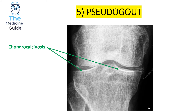This is an example of pseudogout. On an image, pseudogout is represented by chondrocalcinosis — a white hue-ish line visible along the joint line, representing calcification of the hyaline cartilage.